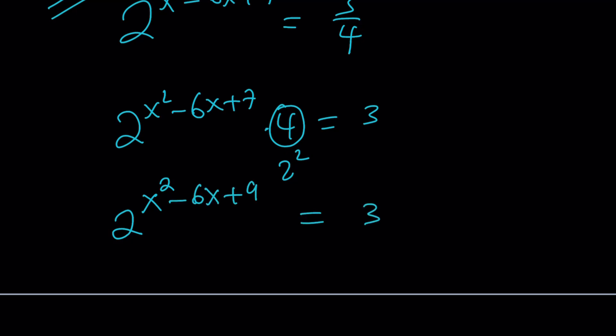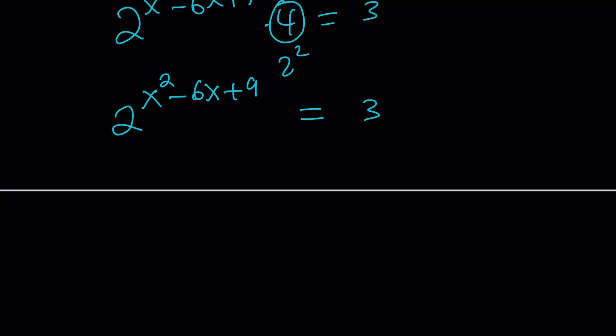This is where the stuff gets interesting because if you look at the exponent very carefully you're going to realize it is a perfect square. Isn't it? This is x minus 3 quantity squared. You should be very familiar with these kinds of expressions. Start practicing them if you're not familiar because when you see them you should be able to recognize really quickly. Now we can write this as 2 to the power x minus 3 squared equals 3.